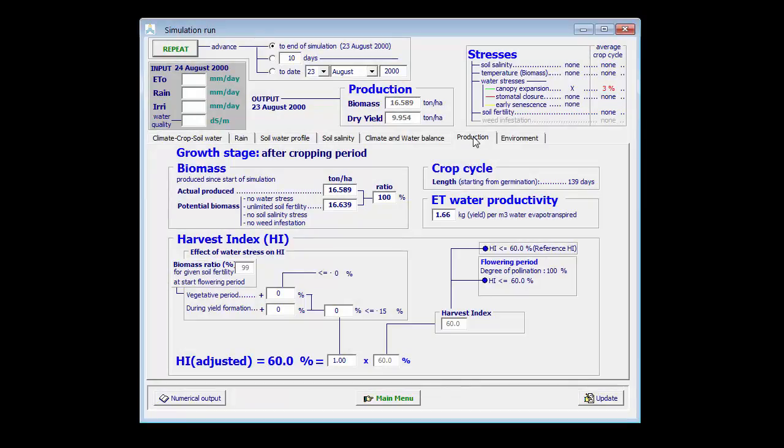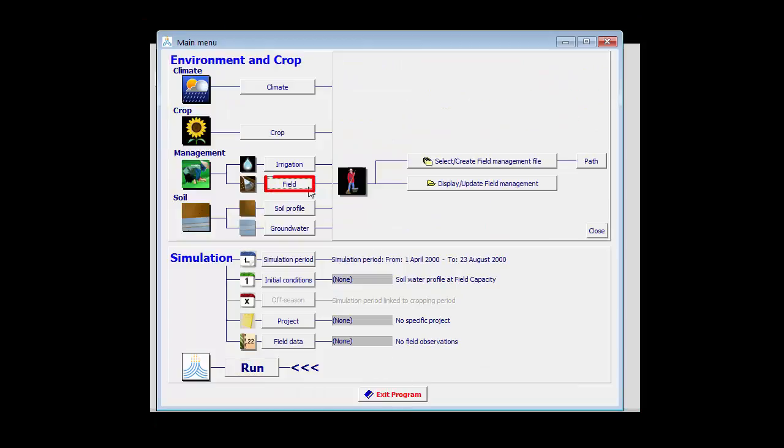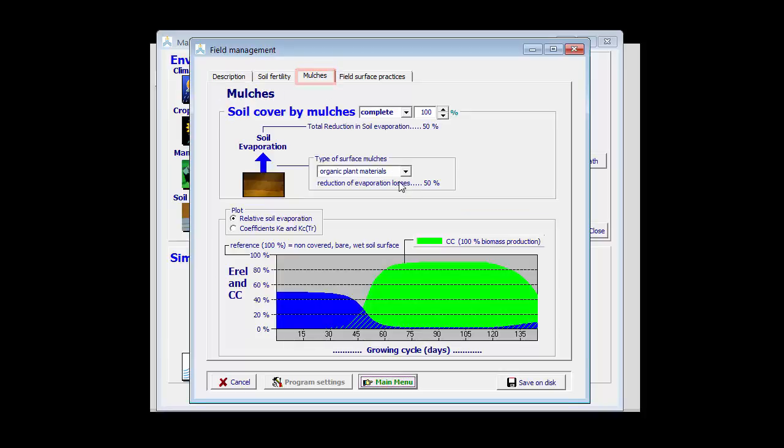Finally, let's now put plastic. So I return to the main menu, and I go back to the field. And now the type of mulches is a plastic, which reduces soil evaporation completely. Let me reduce the soil cover to 90%, just to allow some rain to infiltrate as well.